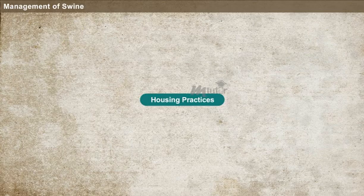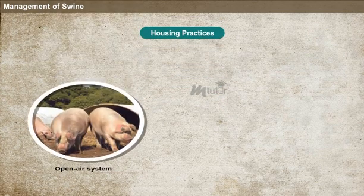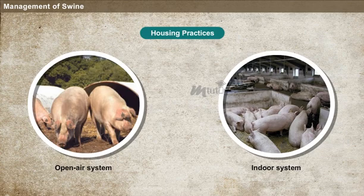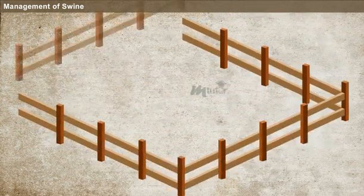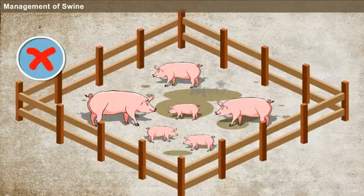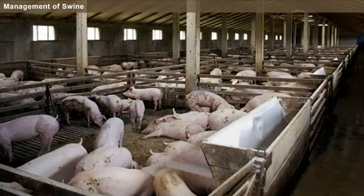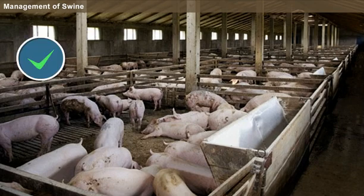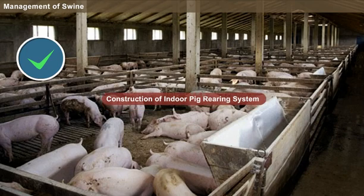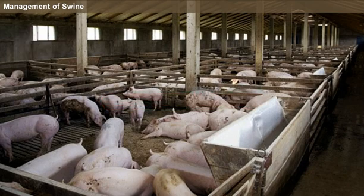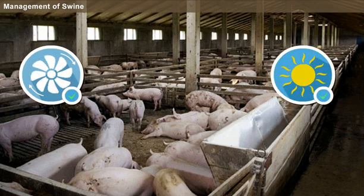Housing practices. Pigs can be raised either in an open air system or in an indoor system. Open air systems are generally not preferred as pigs are easily vulnerable to diseases, but indoor systems are more suitable for pig rearing. The indoor system consists of buildings which should be built in a place where it acquires good ventilation and maximum sunlight.